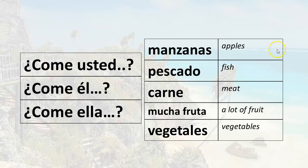Does he eat apples? Come él manzanas. Does he eat fish? Come él pescado. Does he eat meat? Come él carne. Does he eat a lot of fruit? Come él mucha fruta. Does he eat vegetables? Come él vegetales.